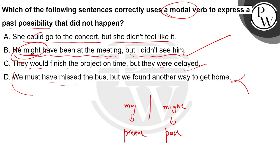The other possibilities — like 'could go to the concert' or 'they would finish the project on time' — these are not past possibility in that sense. The correct answer is the one with 'might,' because past tense uses 'might.' Does that make sense?